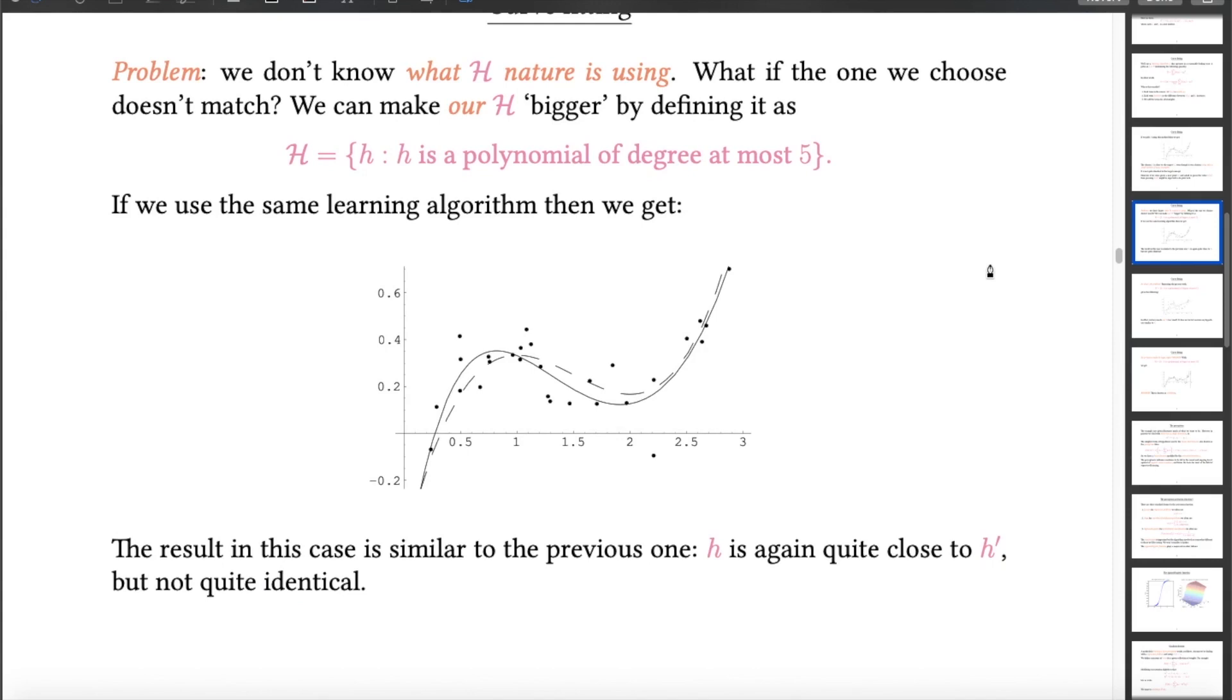But hopefully you can foresee the problem with this. In reality, I would not know what hypothesis space nature was using in the first place to take this function from, to take the function h prime from. So what if the one that I use doesn't match? Well, it's easy enough to explore what might happen. Let's now use the same learning algorithm and choose my h from the collection of all polynomials of degree at most 5. And the underlying thought here is that because I don't actually know which h was being used, I'll make mine big in order to stand more of a chance of choosing something that's close to the unknown function h prime. And if I use the same argument again, I'm still doing quite well. Arguably about as well as I did in the previous slide.